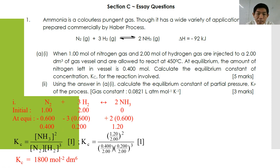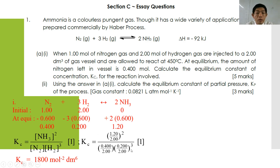Calculating Kc — substitute the concentrations: Kc = [NH₃]² / ([N₂][H₂]³). Don't forget the volume is 2.00 dm³. So it's (1.20/2.00)² divided by (0.400/2.00) × (0.200/2.00)³. After substitution and pressing your calculator, you should get Kc equals 1800. Be careful with the unit: mol⁻² dm⁶. That is how you solve for the Kc problem.